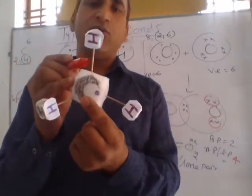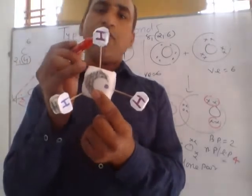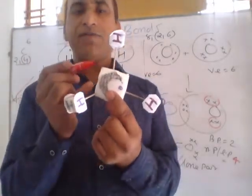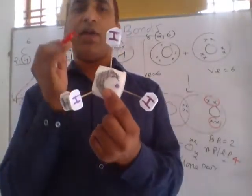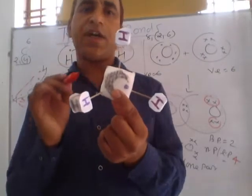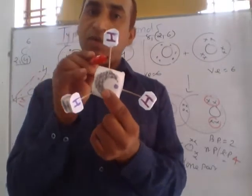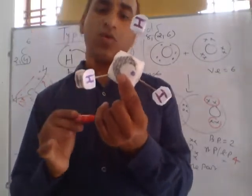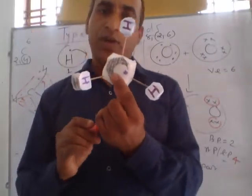Carbon is sharing four electrons with hydrogen. The dots represent electrons of carbon and X represents electrons of hydrogen. This type bond will form. This shape is called tetrahedral shape. Each bond between carbon and hydrogen is a covalent bond.